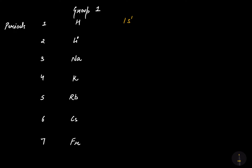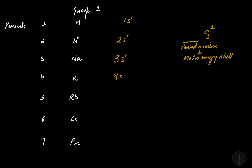The electronic configuration of hydrogen is 1s1. The general electronic configuration of group number one is ns1, where n is the period number — since the period number specifies the main energy shell number. Lithium is in period 2, so it's 2s1. Sodium is in period 3, so it's 3s1.